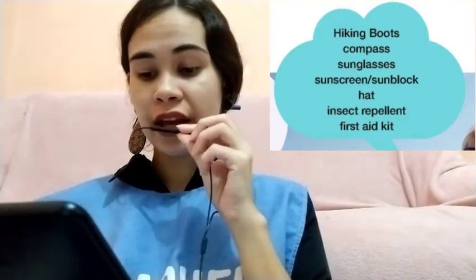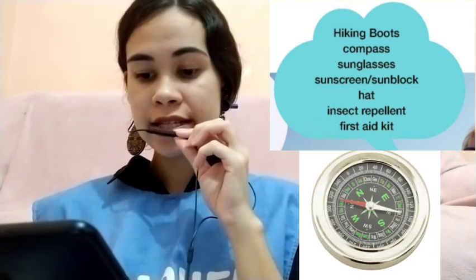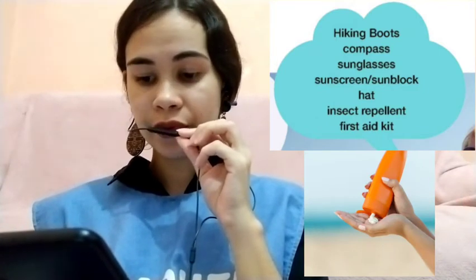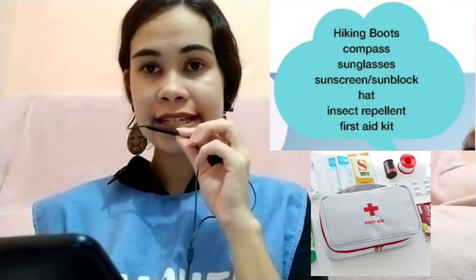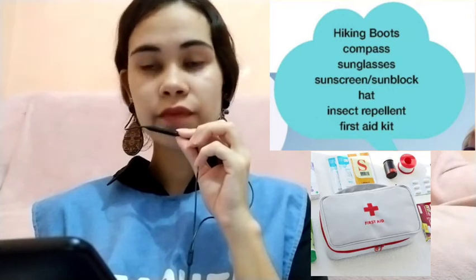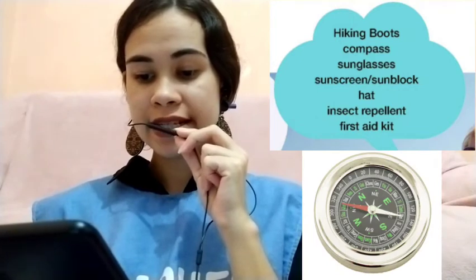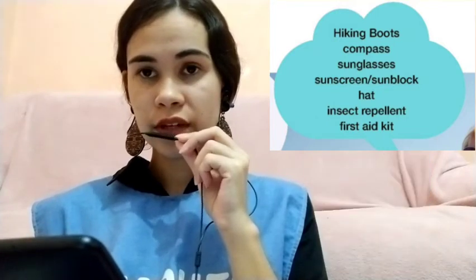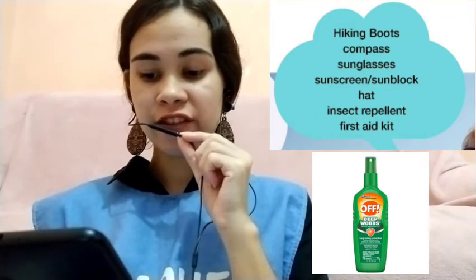Now let's try the next part. Repeat after me: hiking boots, compass, sunglasses, sunscreen, sunblock, hat, insect repellent, first aid kit. One more time: hiking boots, compass, sunglasses, sunscreen, sunblock, hat, insect repellent, first aid kit.